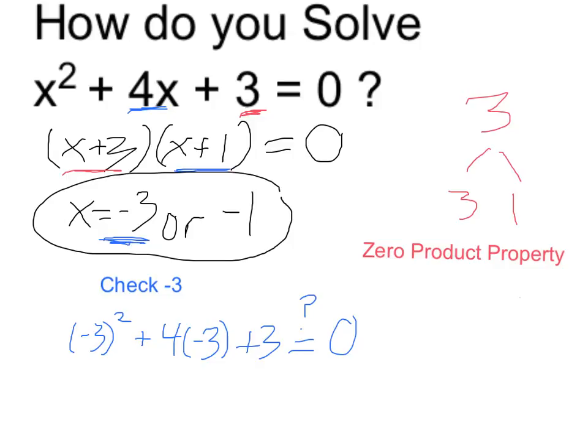But negative 3 squared is 9. Remember, a negative times a negative is a positive, so if we square a negative number, we get a positive result. 9 plus 4 times negative 3 is negative 12, and 9 plus negative 12 is negative 3. So at the end, when I add 3, yes, I do get 0. So I've confirmed that that is a solution.